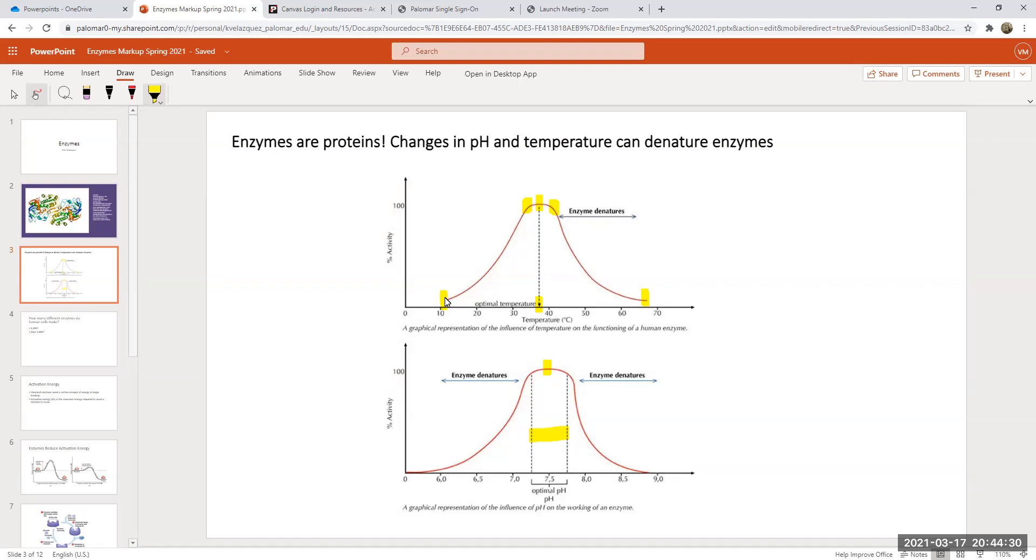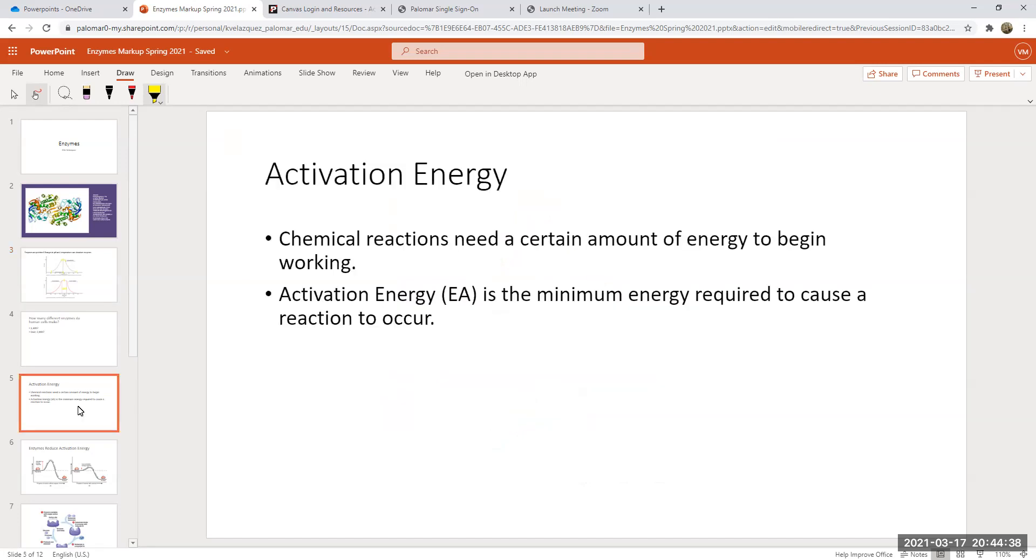Another factor that can affect enzyme activity is how much enzyme you actually have. What do enzymes do? Specifically, enzymes reduce the amount of activation energy needed to cause a reaction to occur. Chemical reactions, even if they are exergonic, require a certain amount of energy to get started.